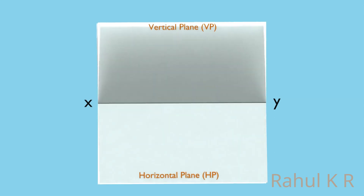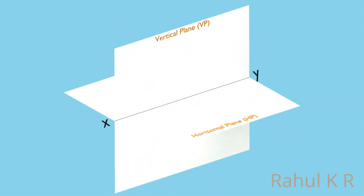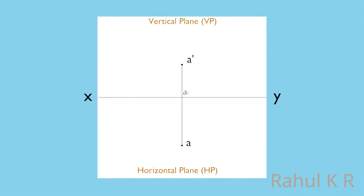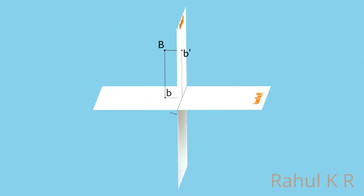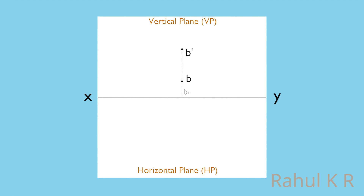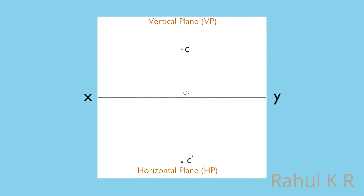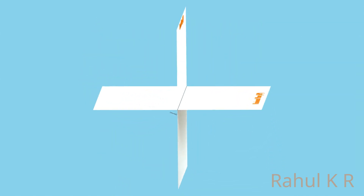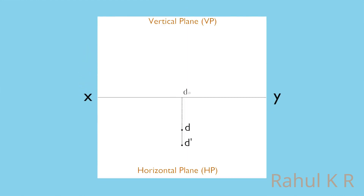As a recap, we have a generalized orientation of top view and front view based on which quadrant the object is placed. If an object is placed in the first quadrant, its front view will be above the XY line and top view will be below the XY line. For objects in the second quadrant, both front view and top view will be above the XY line. If the object is in the third quadrant, its front view will be below the XY line and top view will be above the XY line. For an object in the fourth quadrant, both front view and top view will be below the XY line.